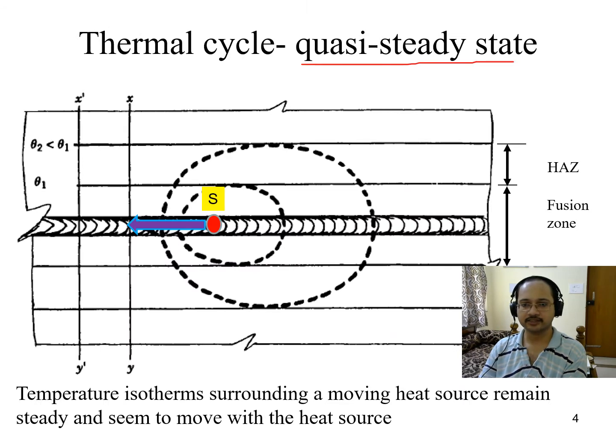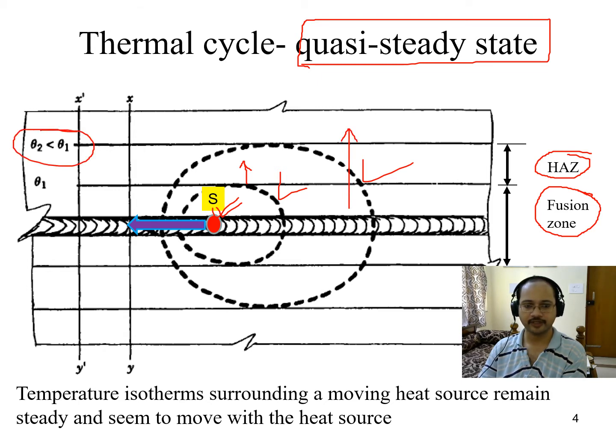Now the thermal cycle quasi-steady state. What happens here? You see a moving heat source which is denoted with S. There are two circles - one is for the fusion zone where the effect of the weld put the molten metal, and the zone away from this fusion zone is the heat affected zone (HAZ). Obviously as we go far in this direction the temperature will drop. Temperature isotherms surrounding a moving heat source remain steady and seem to move with the heat source. So these isotherms also move with the heat source in this direction.